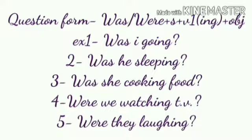Let's see the question form of past continuous tense. Was/Were plus subject plus V1 with -ing plus object. Examples: Was I going? Was he sleeping? Was she cooking food? Were we watching TV? Were they laughing?